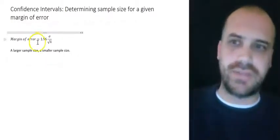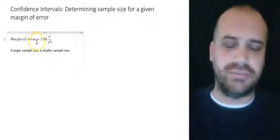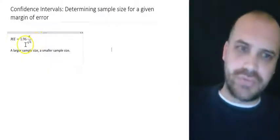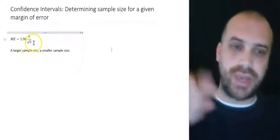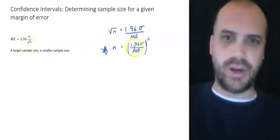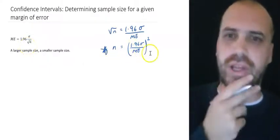Just to make life easy, I'm just going to call margin of error capital ME. And now I'm going to take this formula and rearrange it to make N the subject. Relatively straightforward. You don't need to see me rearrange a formula.